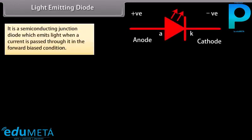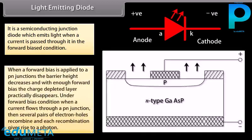A light emitting diode is a semiconducting junction diode which emits light when a current is passed through it in the forward biased condition. It is a P-N junction made of gallium arsenide (GaAs) or some other suitable semiconducting material. The P-layer is made thin so that light energy may reach the charge depleted region after travelling a very short distance.